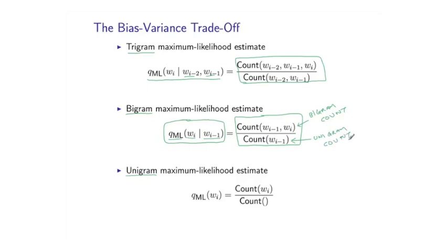If we go a step further to the unigram estimate, this is actually an estimate of the probability of a word that completely ignores the context. So now we're not even going to condition on the previous word in the context. And this is again defined as a ratio of counts. On the numerator I have the unigram count. That's simply the number of times I've seen the word wi in the corpus.